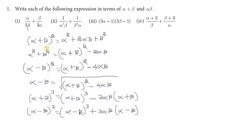First, alpha plus beta whole square. The formula is: a square plus 2ab plus b square equals the whole square. So that means alpha square plus beta square. We have plus 2 alpha beta here. So it is minus from the formula: alpha square plus beta square equals alpha plus beta whole square minus 2 alpha beta. This formula is easy to write.